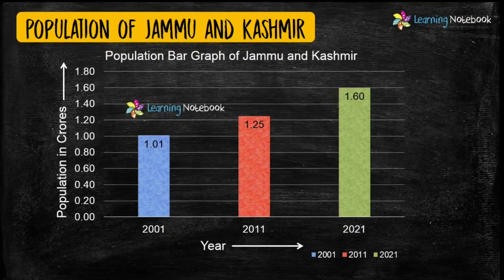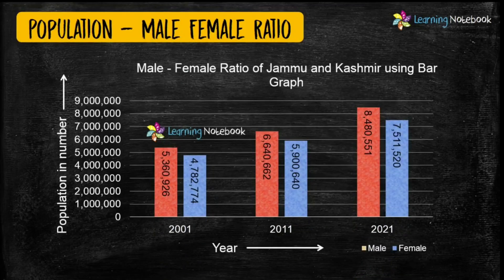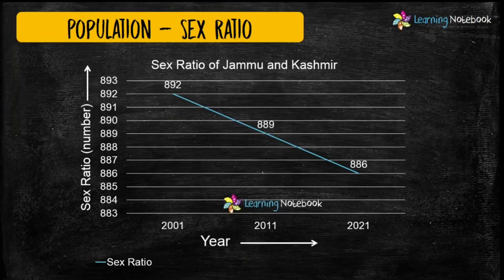Students, you can depict population of Jammu and Kashmir through beautiful bar graphs or line graphs. Double bar graphs can be used to show the male and female ratio of population of Jammu and Kashmir. You can also take help of a line chart to show the sex ratio of population of Jammu and Kashmir.